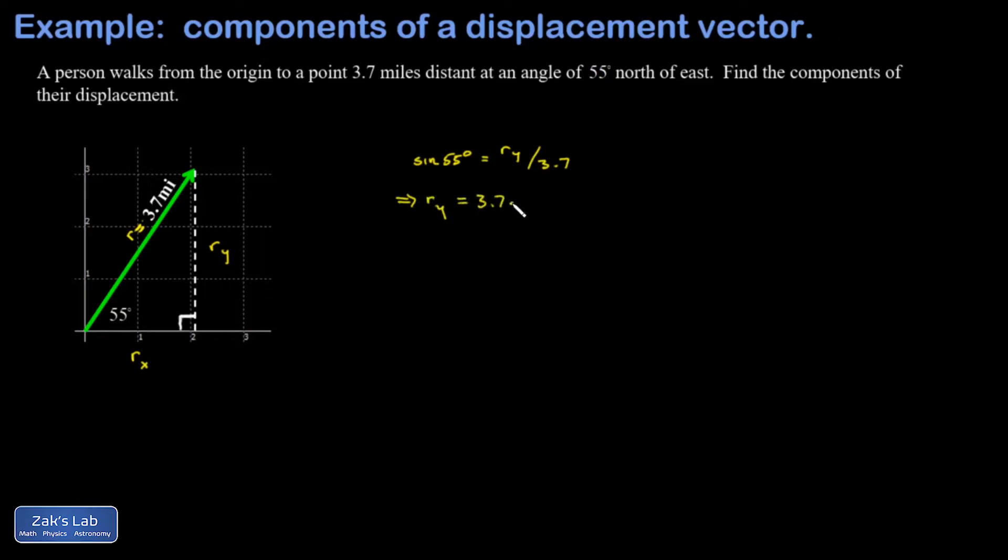In the future, I'll jump straight to this: to get the y-component, which is the side opposite the angle, you take hypotenuse times sine. That gives you the opposite leg. Running the numbers, I get 3.03 miles.